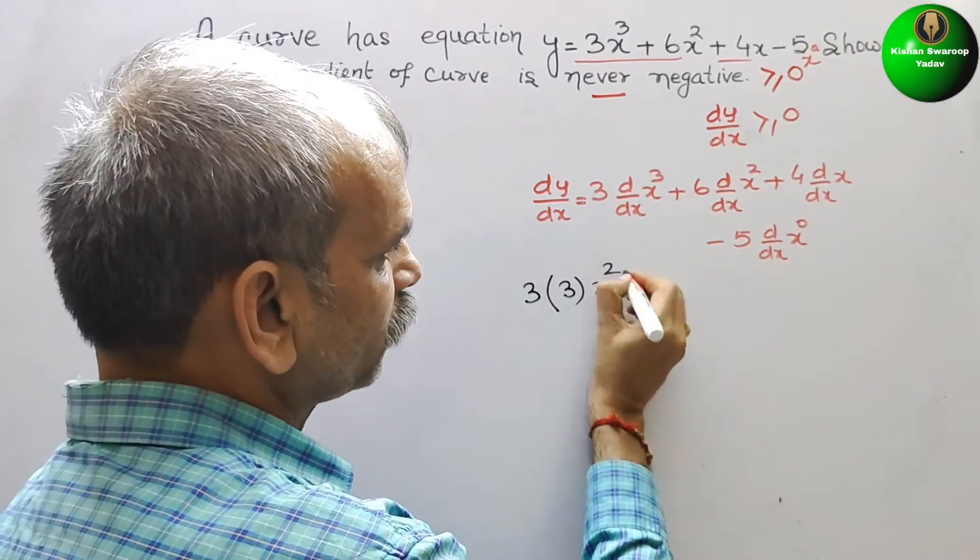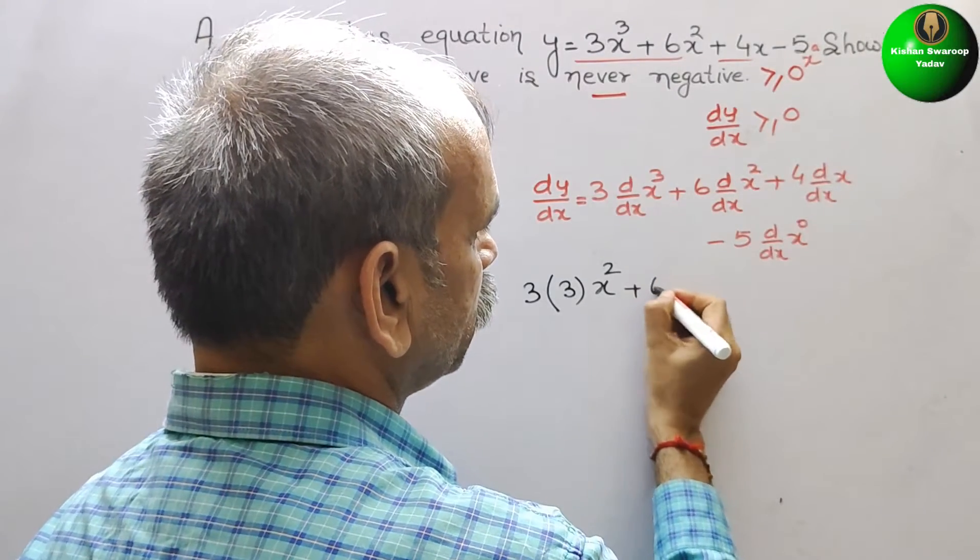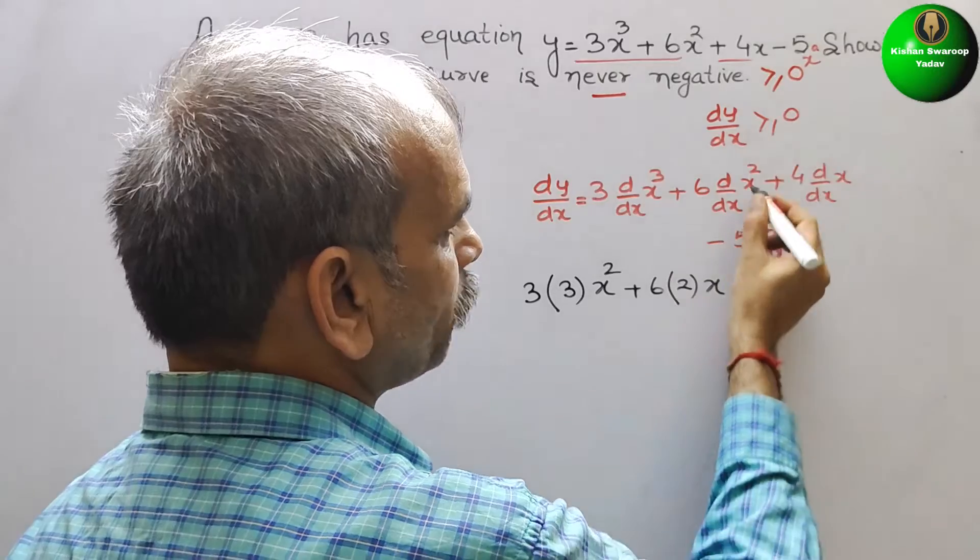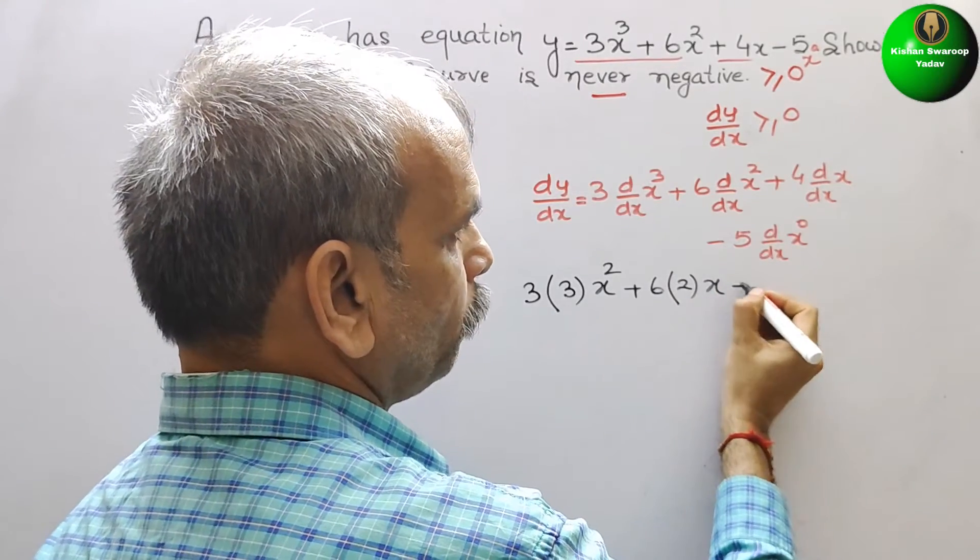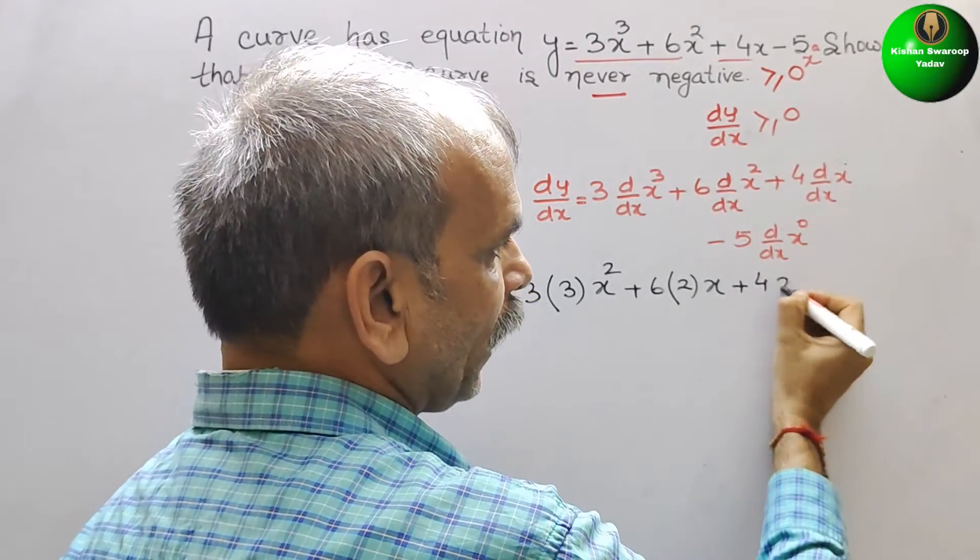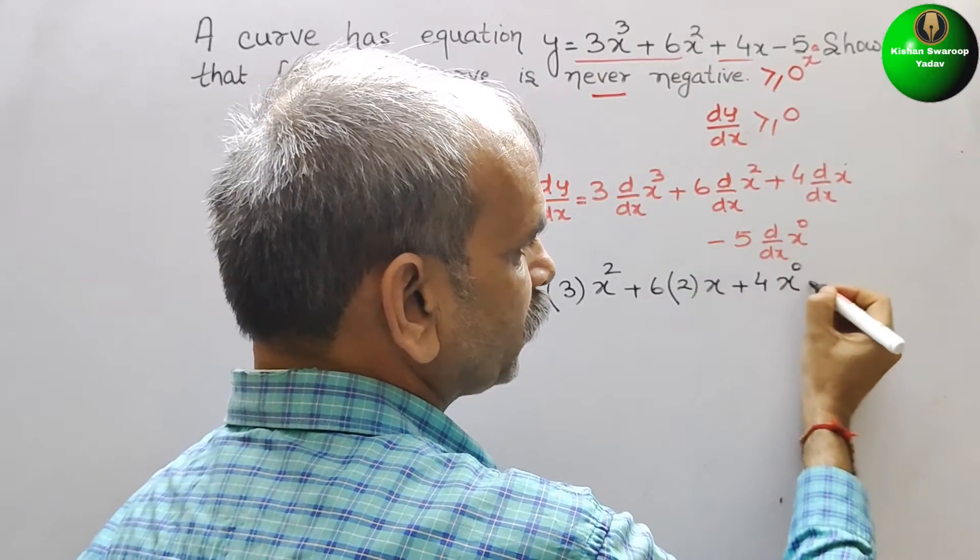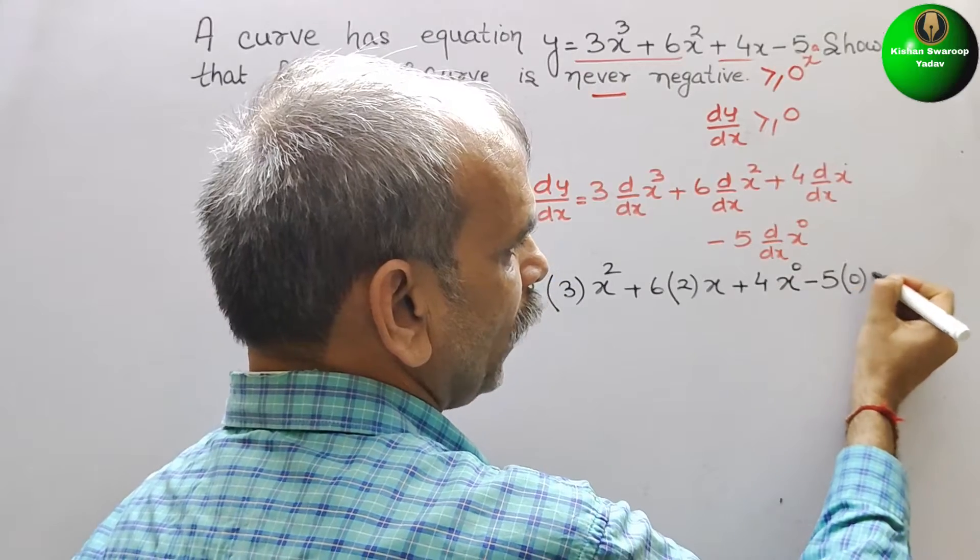3-1 is 2, plus 6, n is 2, x to the power of 2-1 is 1, plus 4, n is 1, x to the power of 1-1 is 0, and this will be minus 5, n is 0.